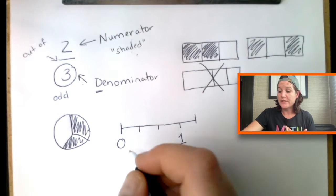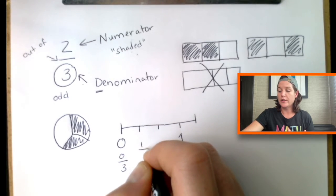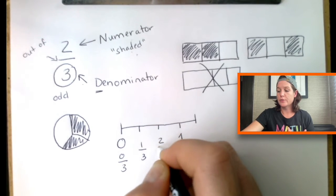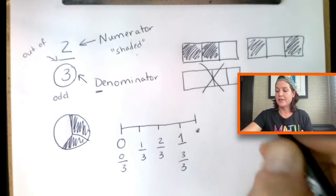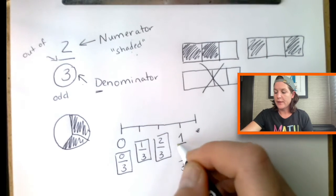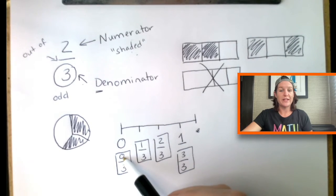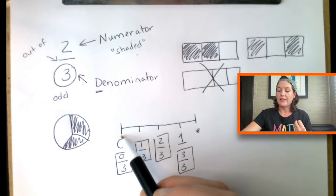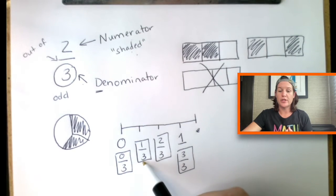And now we can model the other pieces of the fraction. So, this would be zero thirds. This would be one third, two thirds, and three thirds. Number lines tend to get students tripped up just a little bit. That's because a lot of them like to start one thirds right here, but we have to teach them that when they actually make that first jump, that's where the one third starts.